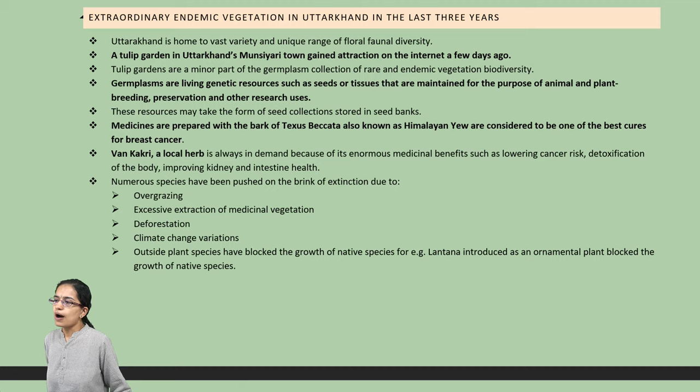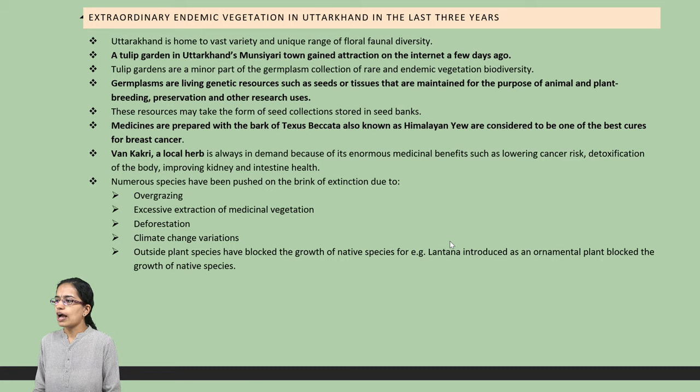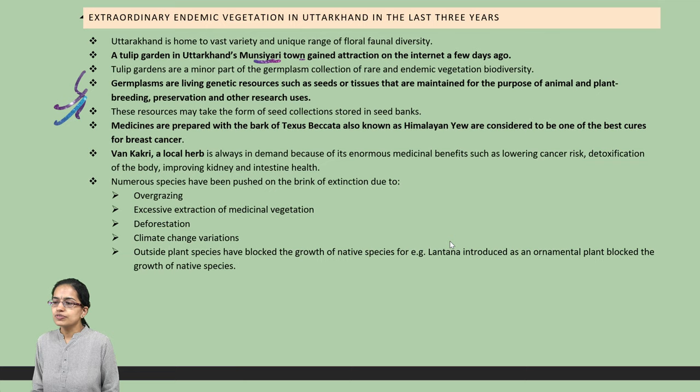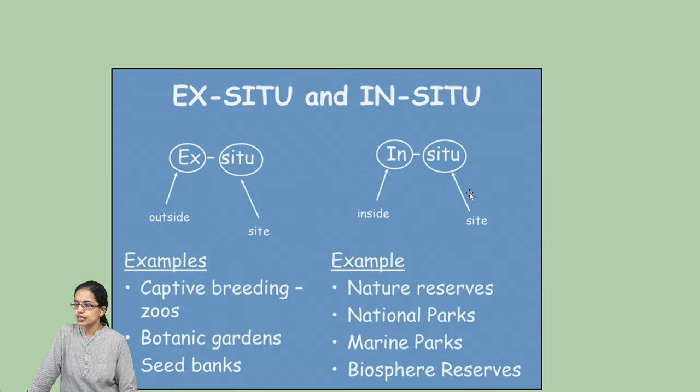Conservation can be either in-situ — within natural environments — or ex-situ — outside natural environments. In the regions of Uttarakhand, Munsiari town has a tulip garden which is well known, and germplasm is being protected there. Medicines are also being extracted from the bark of the Himalayan yew, used to cure various cancer diseases. Kakari, a local herb, is again used for cancer, detoxification of the body, and improving kidney health.